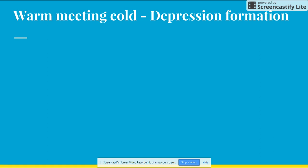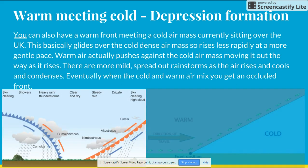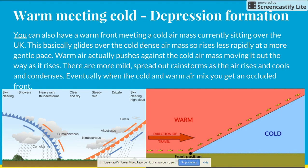The second way a depression is formed is warm air meeting cold. A warm front meets a cold air mass currently sitting over the UK, for example. The warm air basically glides over the cold, dense air mass, rising less rapidly at a more gentle pace. The warm air pushes against the cold air mass, moving it out of the way as it rises. There are more spread-out rain storms as the air rises and condenses. Eventually, when cold and warm air are mixed, you get an occluded front.